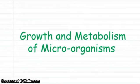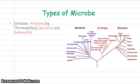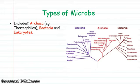Welcome back everyone to the next part of Higher Biology, Unit 2, Metabolism and Survival, which is the growth and metabolism of microorganisms. Here we have a look at different types of microbes to begin with. This includes archaea, for example thermophiles such as Thermosocraticus for PCR, bacteria, and eukaryotes.